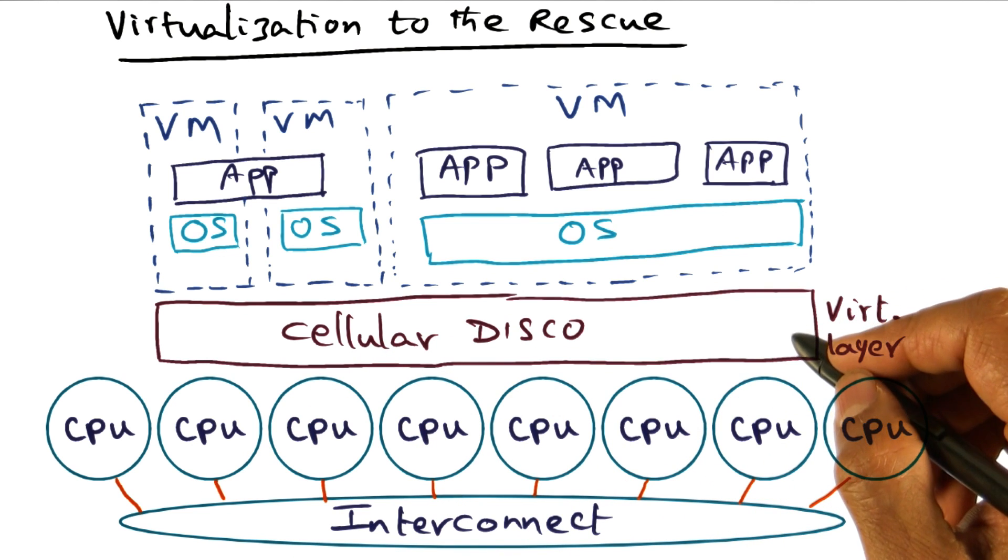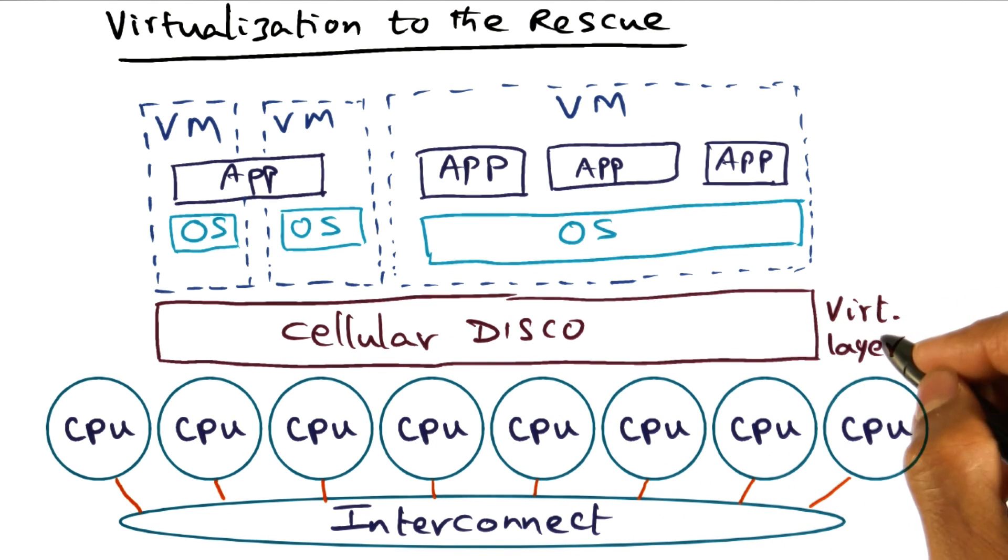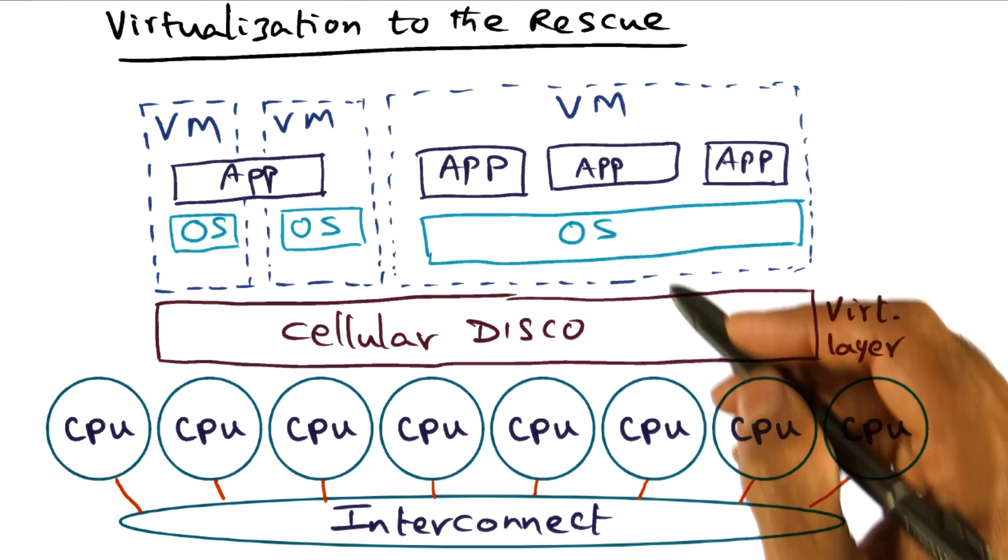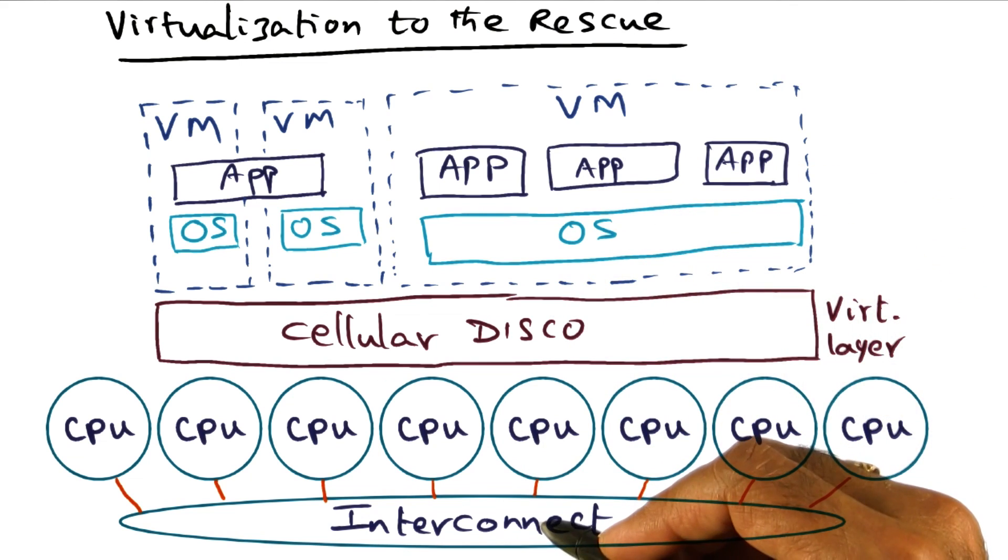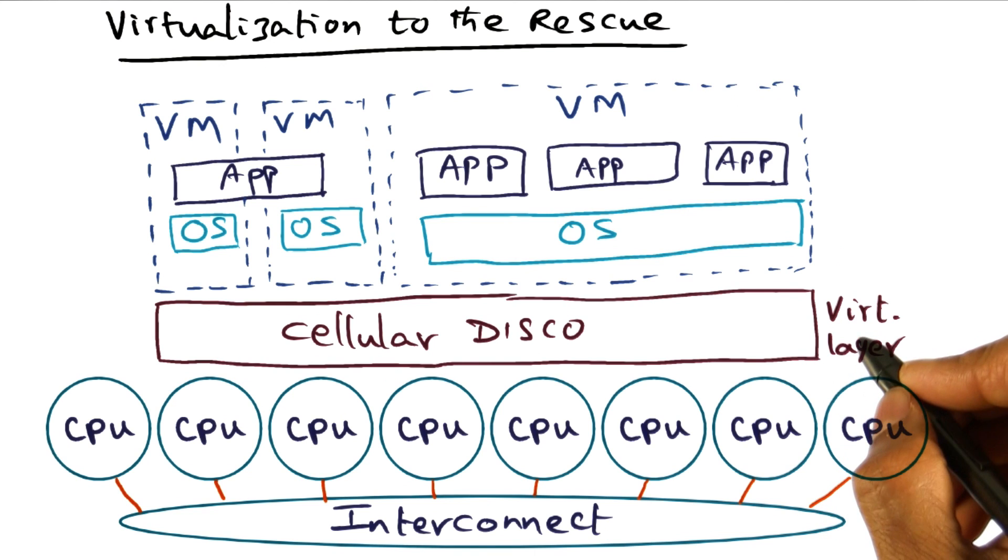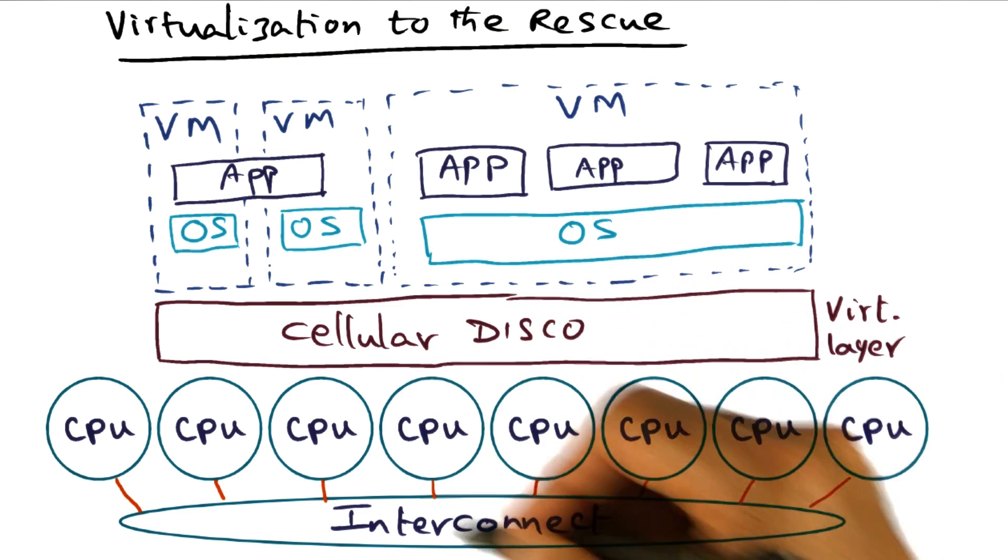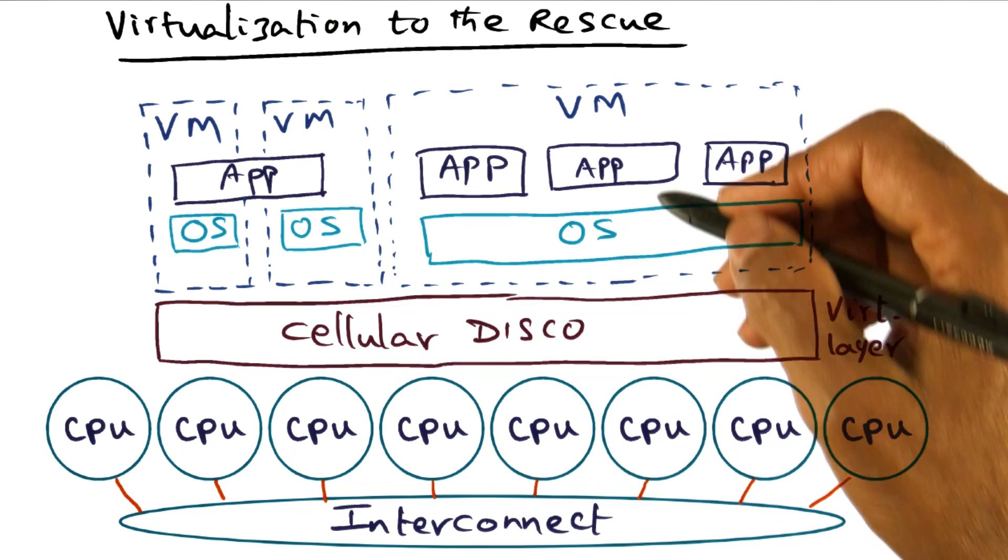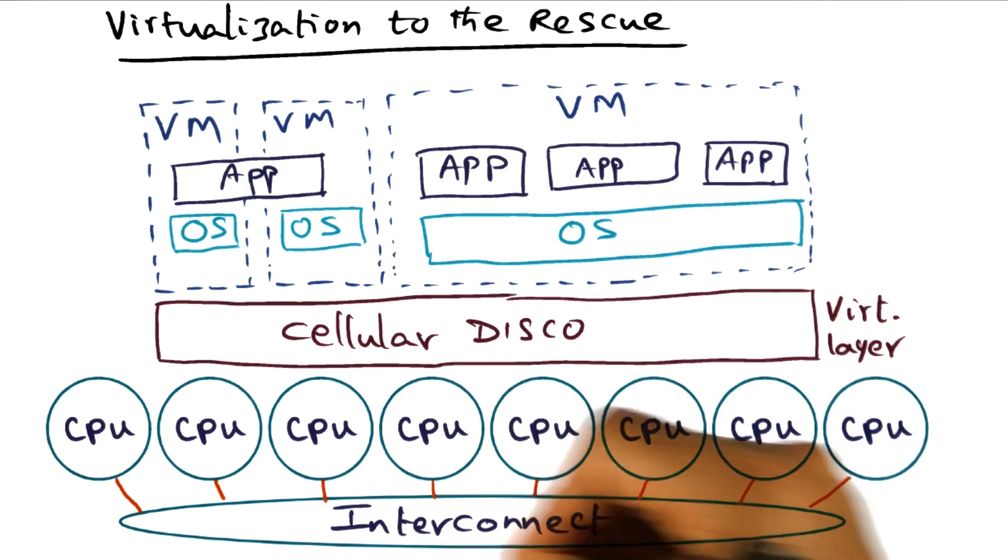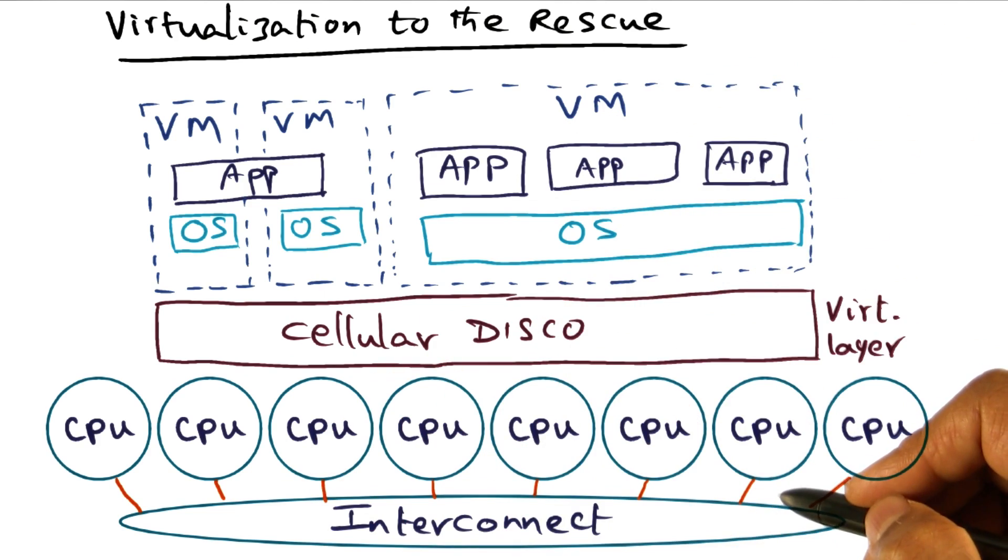So in this thought experiment, what Cellular Disco does is show by construction that you can alleviate some of the pain points in building an operating system, especially with respect to I/O management. I'm going to focus on just the I/O management part and on how I/O is handled with Cellular Disco sitting in the middle between the virtual machine on top and the physical hardware at the bottom.